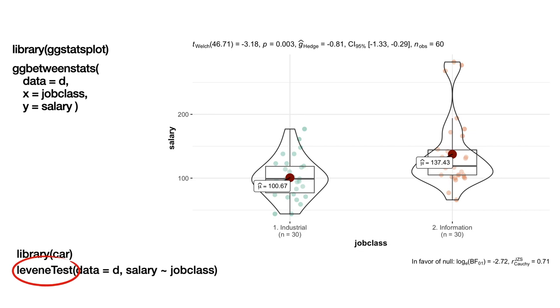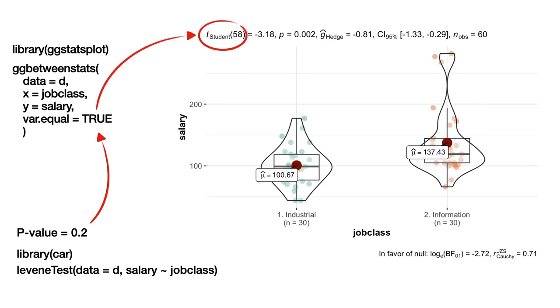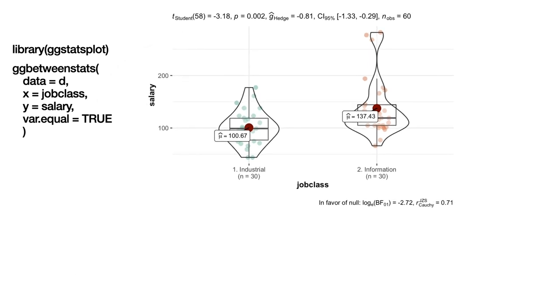Well, we can use the Levene's test from car package to answer this question. The test assumes that samples have similar variances, that's the null hypothesis, and a p-value below 0.05 would reject this hypothesis and would mean that samples have different variances. A p-value over 0.05, like in our case, tells us that variances are similar. Fortunately, we can override the default argument var.equal = FALSE through the var.equal = TRUE, which will result in the Student's t-test instead of the Welch t-test.